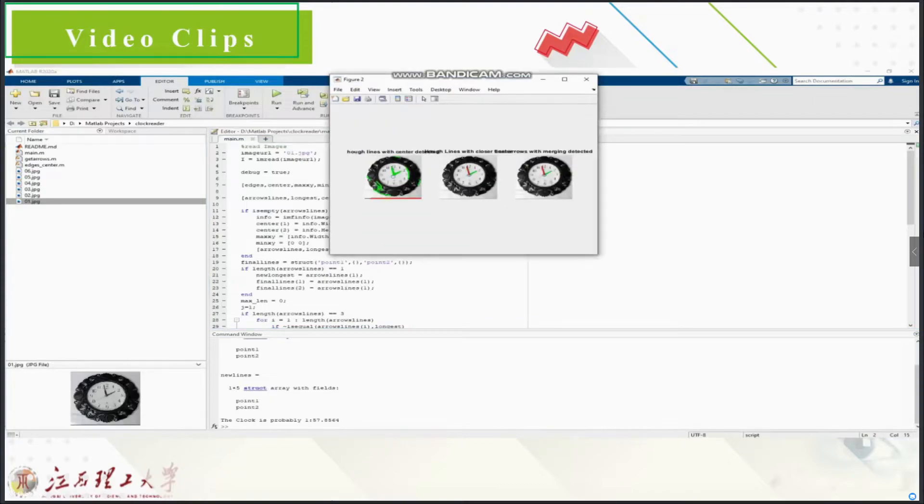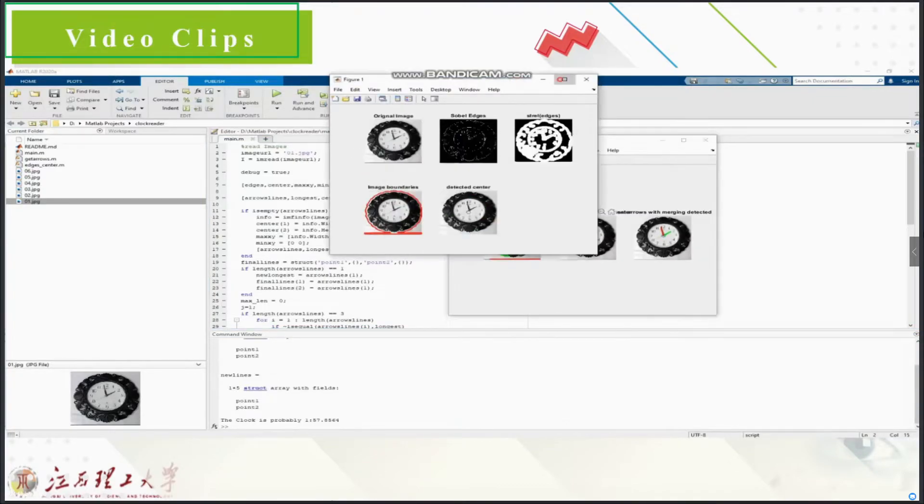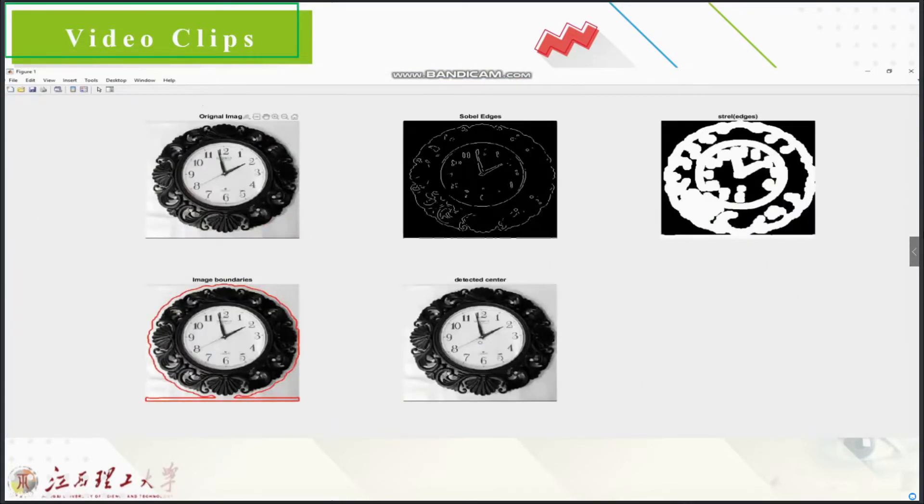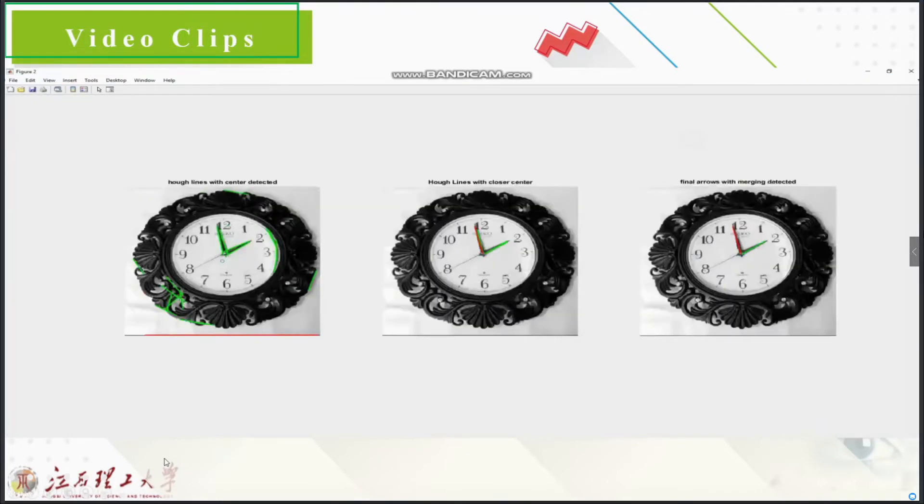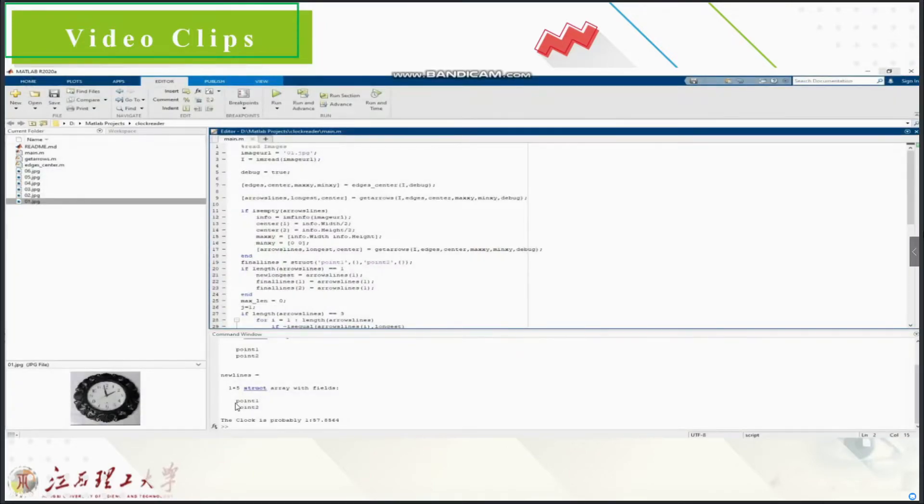As we can see, the program ran very well and it is showing all the results. Here we can see the Hough lines with center detected and closer center.